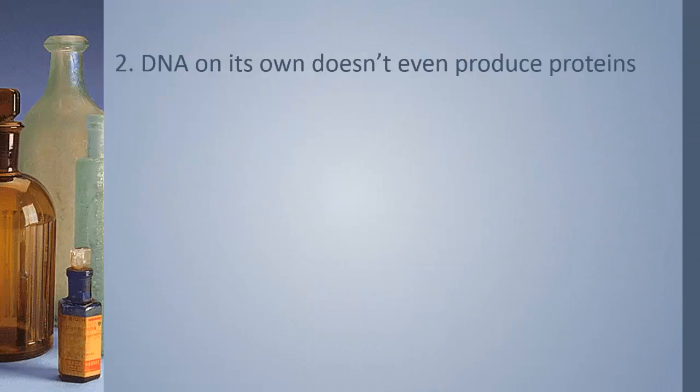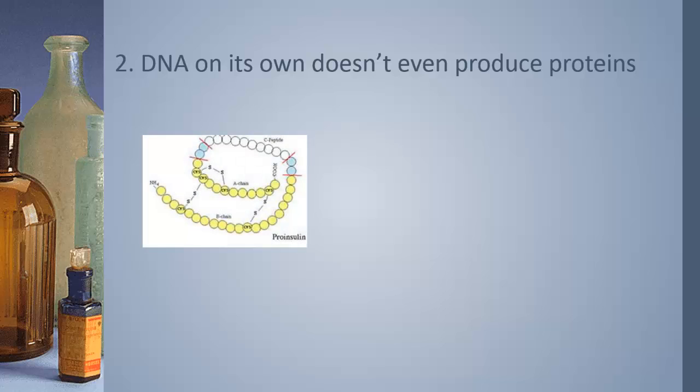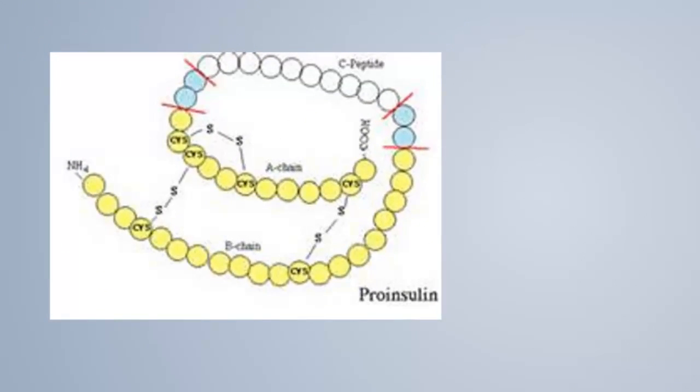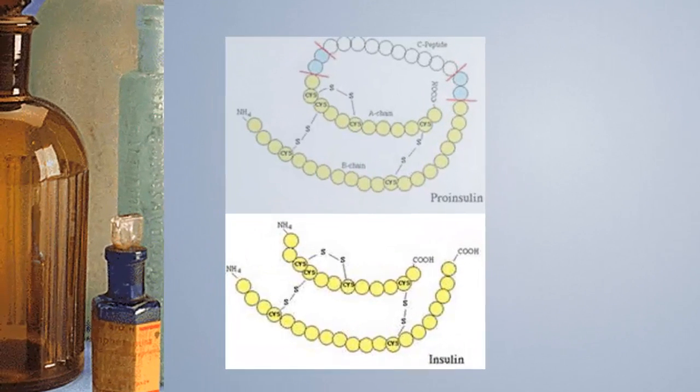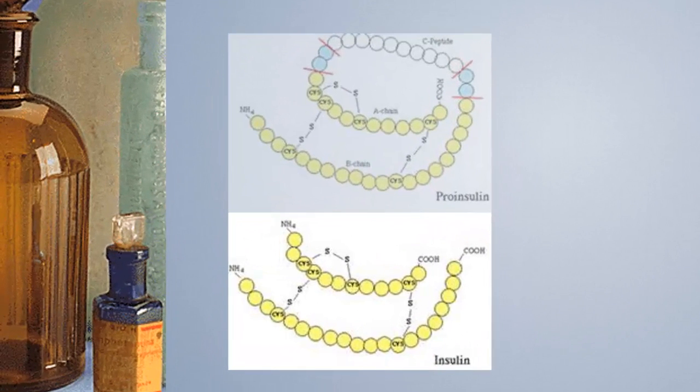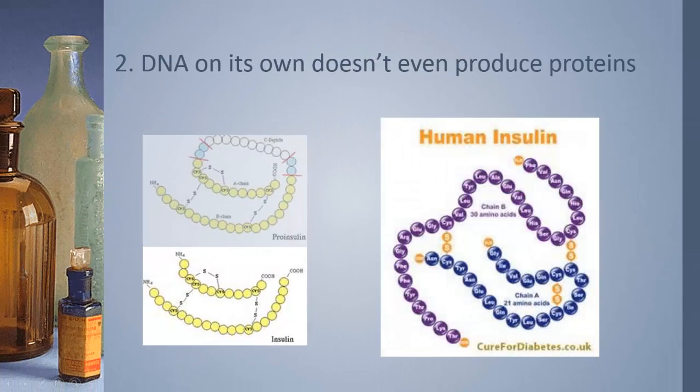I would even claim that DNA on its own can't even produce proteins, which it's supposed to do. Take for instance insulin. Insulin is a polypeptide of amino acids and it's created based on a DNA code, which is true. But it's not ready yet. It has to be transformed into insulin. Certain parts have to be cut out. And that's even not enough. It's not a protein yet that works. It has to be folded in a certain way.